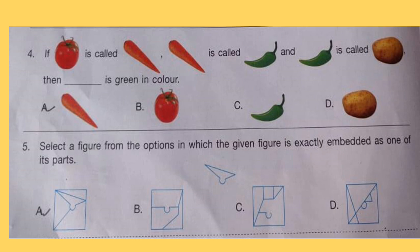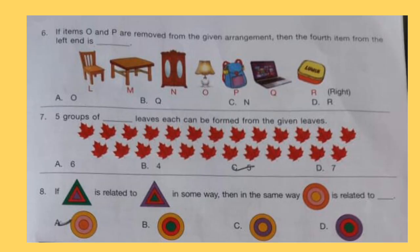Question 5: Select a figure from the options in which the given figure is exactly embedded as one of its parts. Question 6: If items O and P are removed from the given arrangement, then the fourth item from the left end is dash. Look at the arrangement carefully and select your answer.